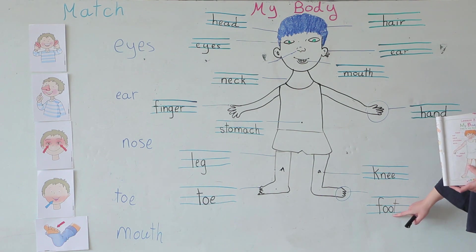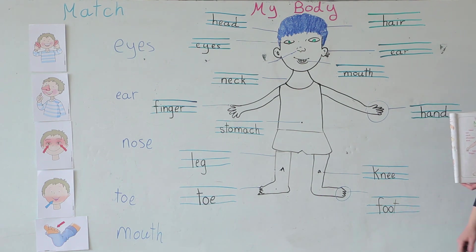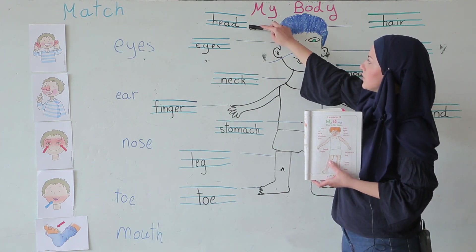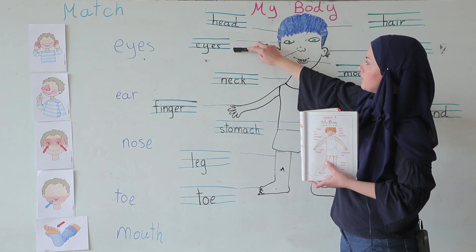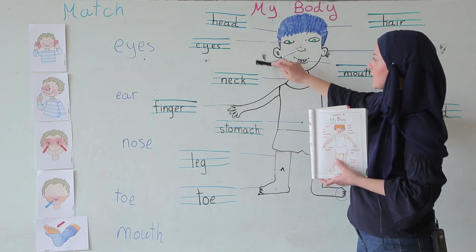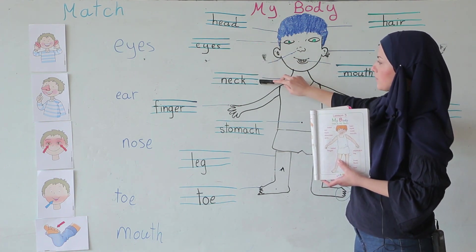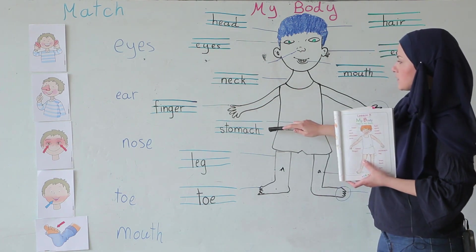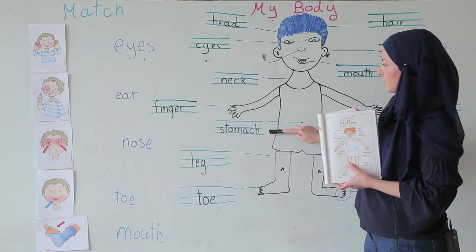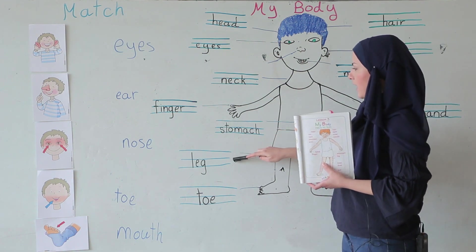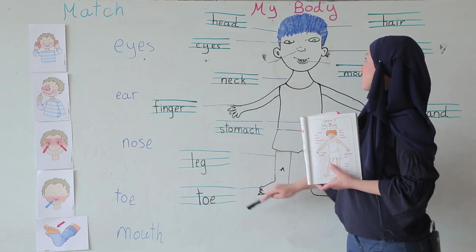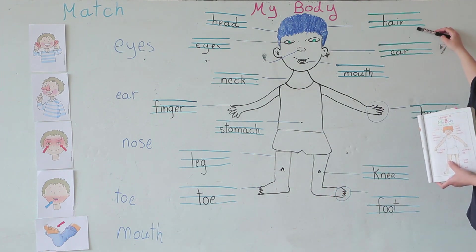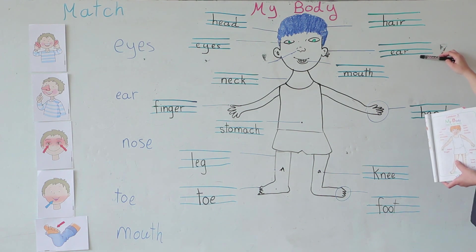One more time: head, eyes, neck, finger, stomach, leg, toe, hair, ear, mouth, hand, knee, foot.